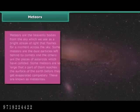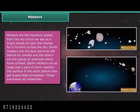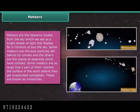Meteors are heavenly bodies from the sky that we see as a bright streak of light flashing for a moment across the sky. Some meteors are dust particles left behind by comets, while others are pieces of asteroids that have collided. Some meteors are so large that a part of them reaches the surface of the Earth before they get completely evaporated — these are known as meteoroids.